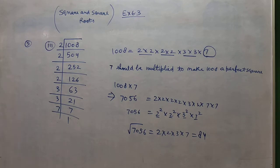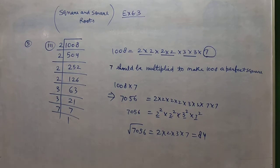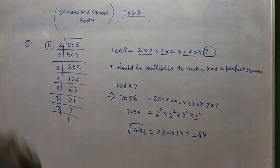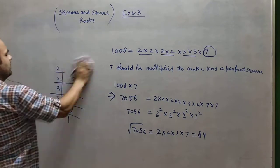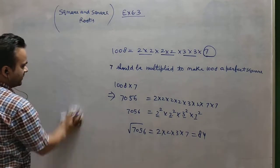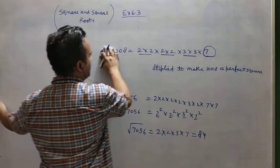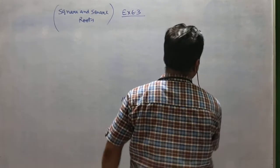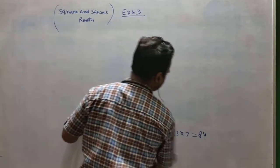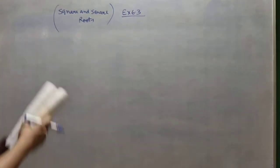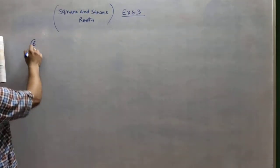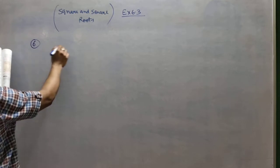This is question number 5; the other parts you can do yourself. Now I am doing question number 6. Question number 6 is asking: by what number do we have to divide? I am taking 2925 as the example.